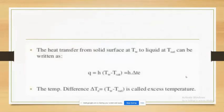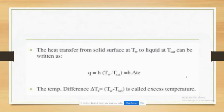The heat transfer from a solid surface at T_w to liquid at T_saturation can be written as: Q = H × ΔT = H × ΔT_excess, where ΔT_excess is called the excess temperature. I end my part here; now my groupmate Harsimran will continue further.